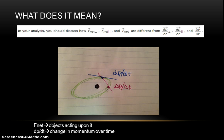Now what does it mean? How are f net and dp dt different from each other? According to the momentum principle, they are the same numerical value, but f net predicts the net force of all the objects acting upon it, while dp dt represents the change in momentum over time.